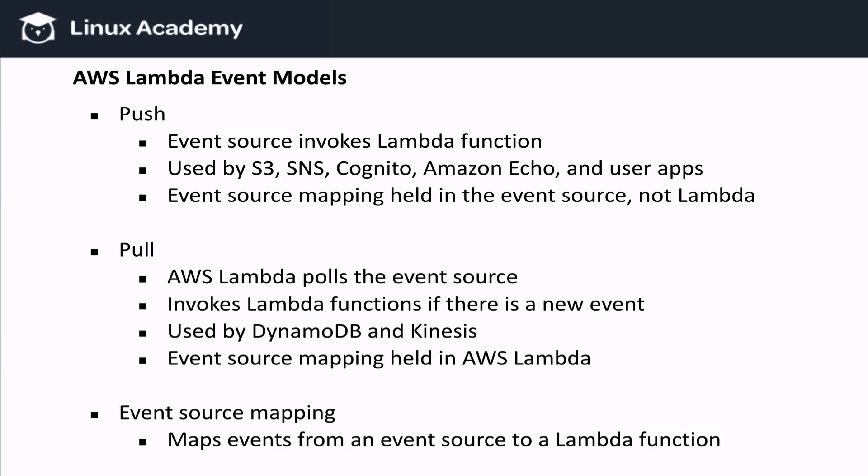On the other hand, a pull model is the opposite. With the pull model, we call AWS Lambda's API to set up event source mapping. Because in this case, Lambda pulls a service to know whether a new event has occurred or not, instead of the service telling Lambda. The pull model is used by DynamoDB Streams and Kinesis. This slide gives you more information into how Amazon maps and orders events from sources to functions, and it is important to understand because it slightly changes how you configure your functions and permissions.